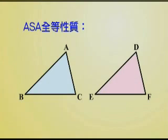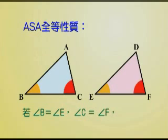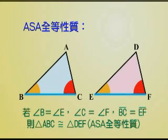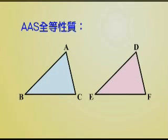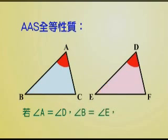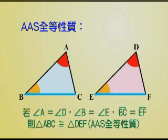在三角形ABC和三角形DEF中，角B等于角E，角C等于角F，线段BC等于线段EF，这两个三角形就会全等，我们称为ASA全等性质。在三角形ABC和三角形DEF中，角A等于角D，角B等于角E，线段BC等于线段EF，这两个三角形就会全等，我们称为AAS全等性质。